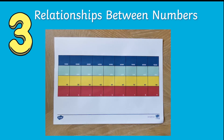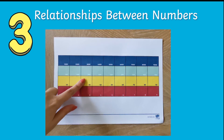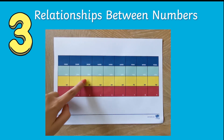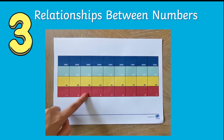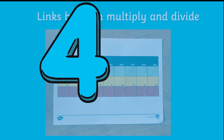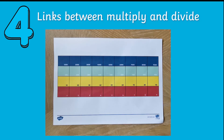Gattegno charts are also a great way to show relationships between numbers. I can see that thirty is ten times three, or three hundred is a hundred times three. You can also use these charts to show how dividing and multiplying by ten, a hundred or a thousand are linked.